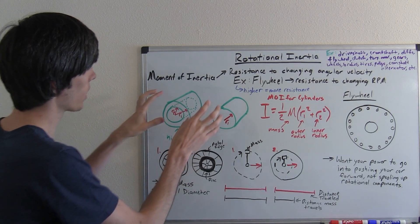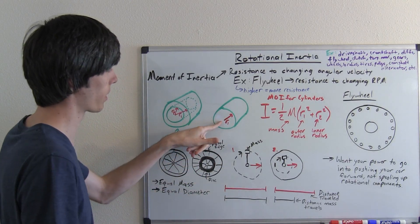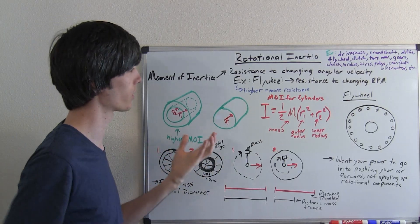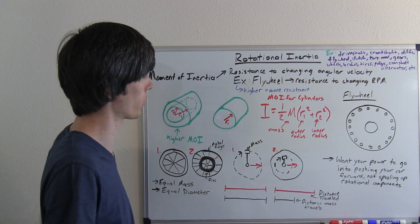If you were to take both of these and put them on top of a hill and let them roll down, this one would reach the bottom first because its moment of inertia is less. It wouldn't resist gravity and it would rotate quicker.